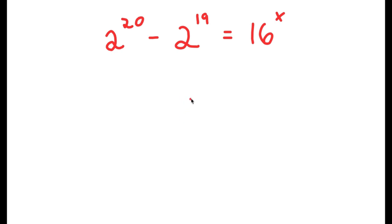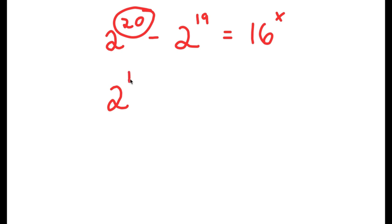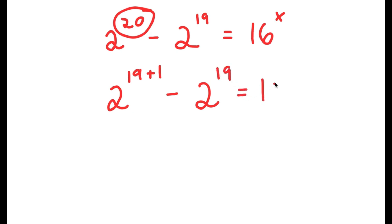In this problem, I have 2 to the power of 20 minus 2 to the power of 19 is equal to 16 to the power of x. I'm going to first start by rewriting 20 as 19 plus 1. So now I have 2 to the power of 19 plus 1 minus 2 to the power of 19 is equal to 16 to the power of x.